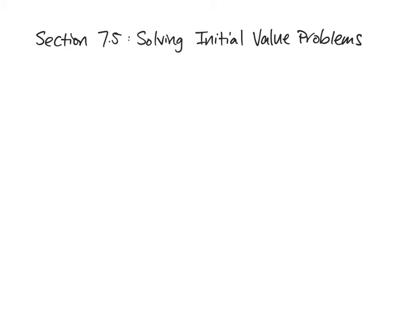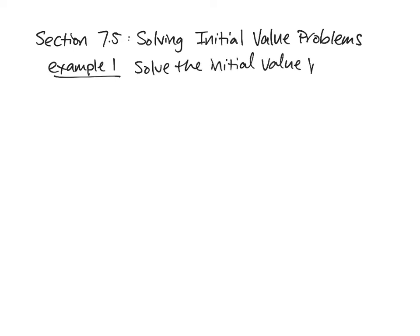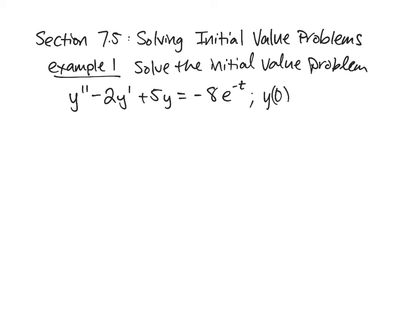What we're going to do to solve an initial value problem is use the Laplace transform to solve the problem in our S universe. I'm going to start right away with an example. So Example 1: we want to solve the initial value problem y double prime minus 2y prime plus 5y equals negative 8 times e to the negative t, with initial conditions y(0) equals 2 and y prime(0) equals 12.